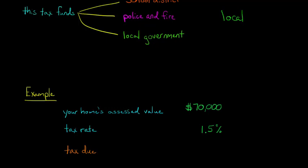Let's assume that you have a home, and this bears mentioning, this is for a home that you own. If you're renting property, you generally don't have to worry about property taxes because it's the owner of the home, owner of the land that is subject to the property tax. So let's say it's your home, you own a home, and the assessed value of that home is $70,000. And the tax rate, the property tax rate in your region is 1.5%.